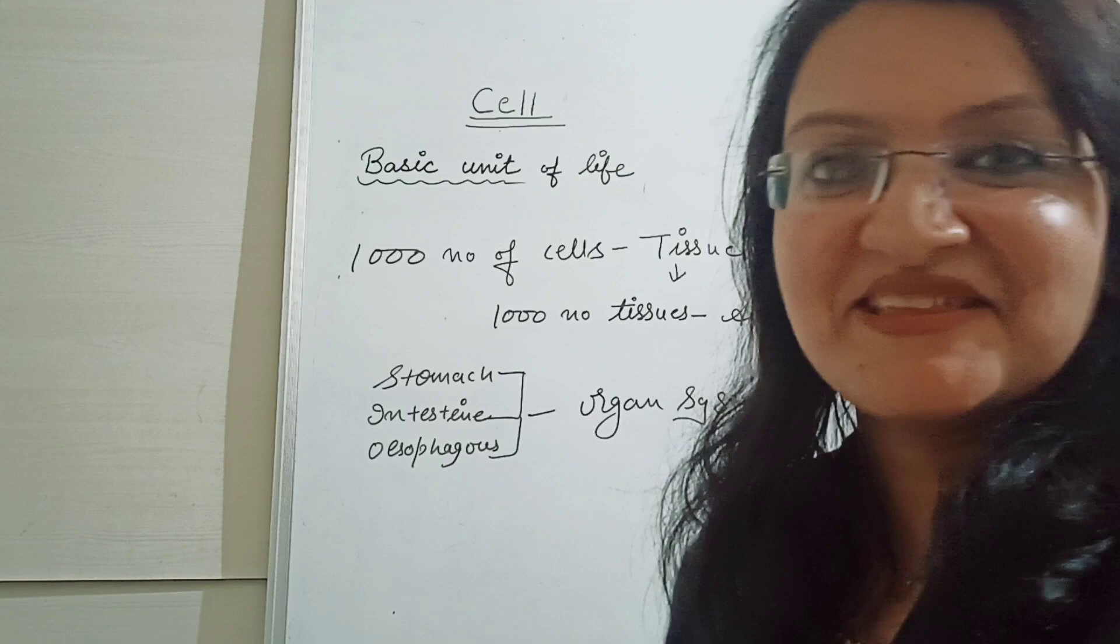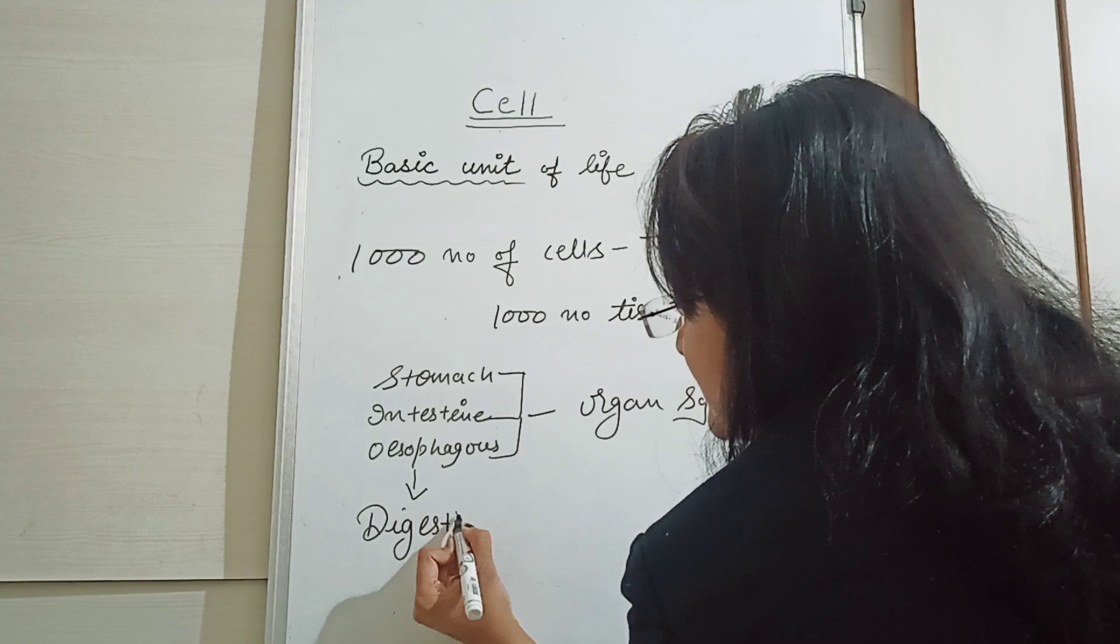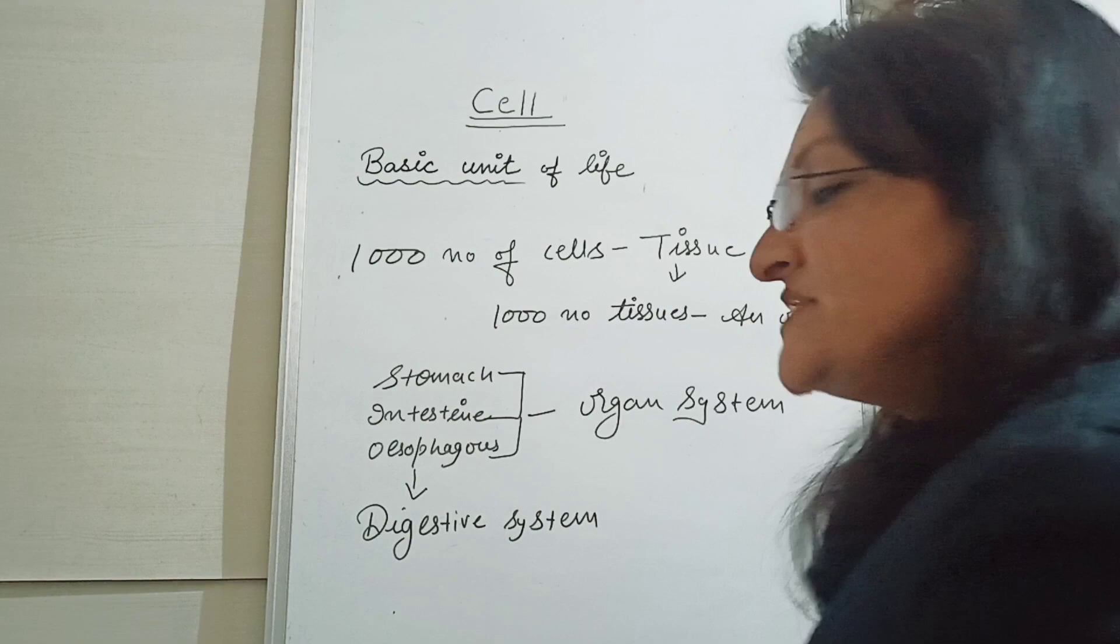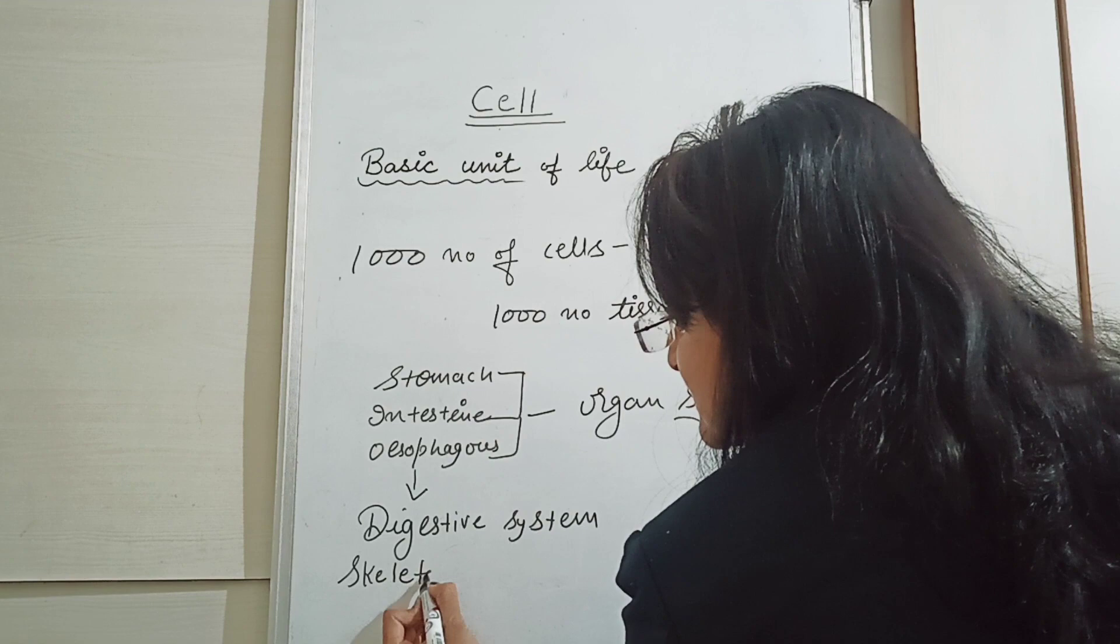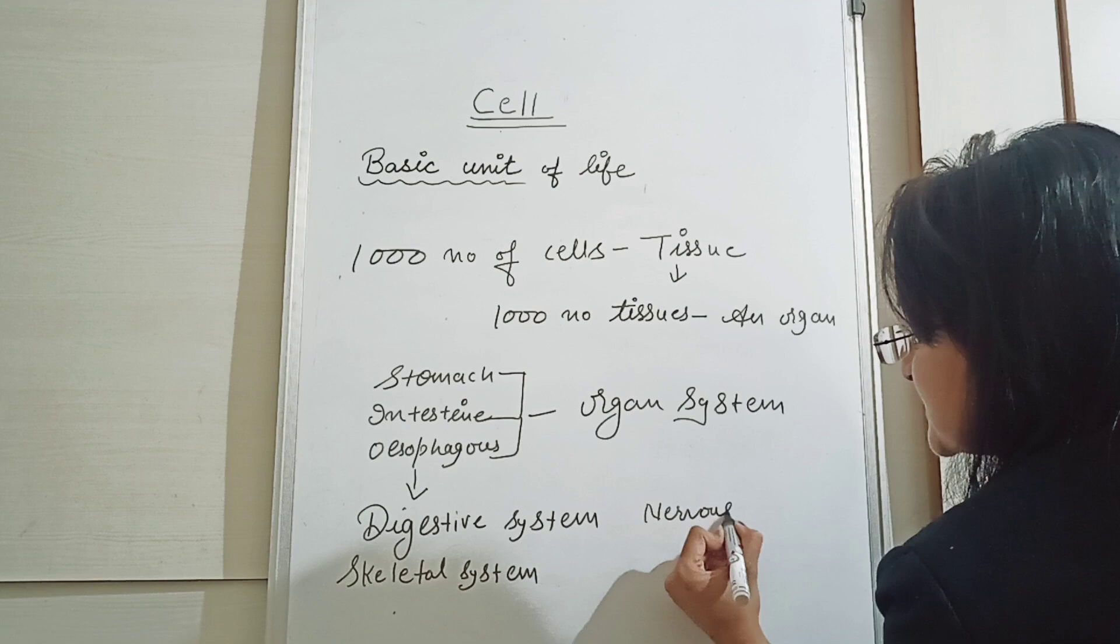In our bodies, many kinds of organ systems exist. These organs together make up the digestive system. Similarly, there is the skeletal system and the nervous system.